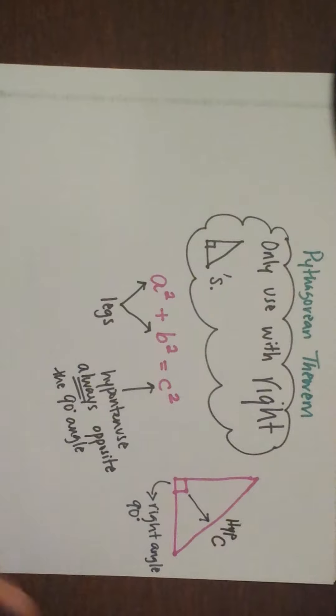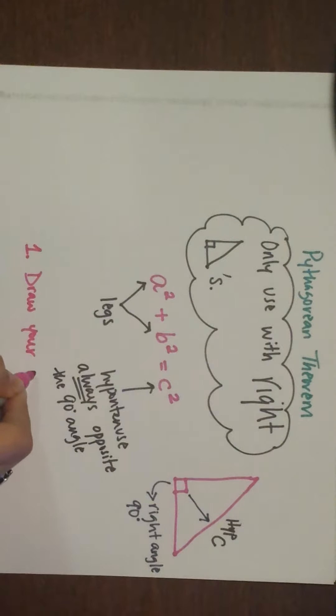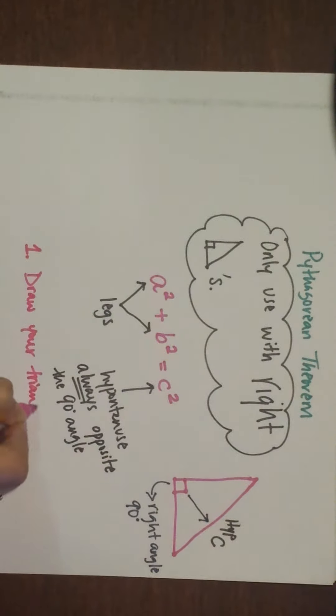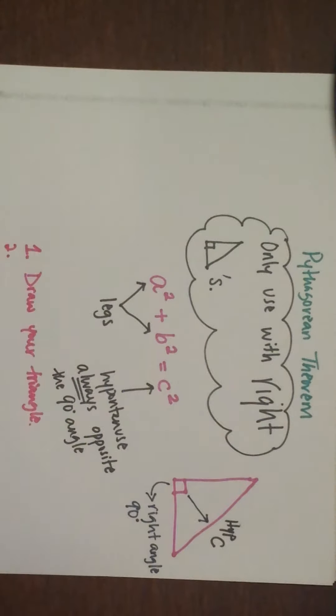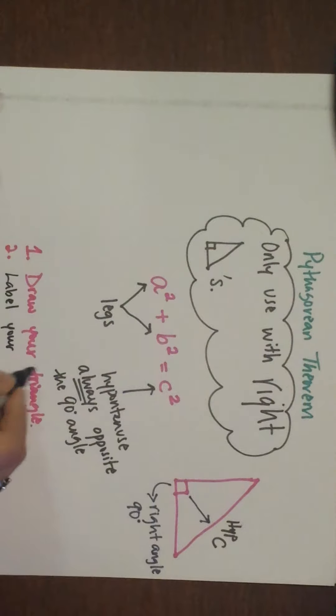We're going to take a look at five steps that you need to do any of these Pythagorean theorem problems. Step number one: you need to draw your triangle. Step number two: label your triangle.